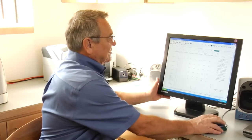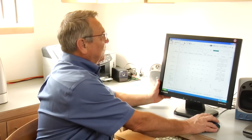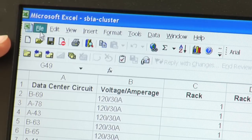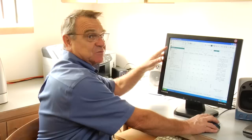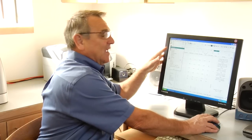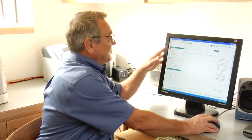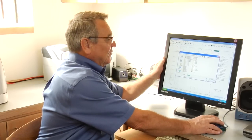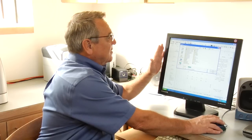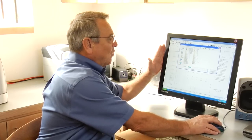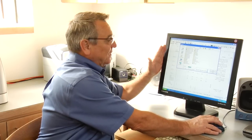First thing we do is find where File is in the upper left-hand corner and we go to File and we go to Save As because we're going to save this file in a different format. So we click on Save As and then we get a box that shows us where we're going to save it, what we're going to save it as, and what the name is going to be.